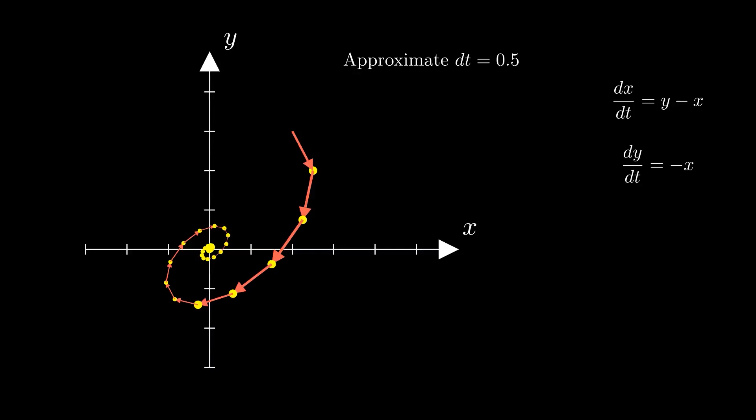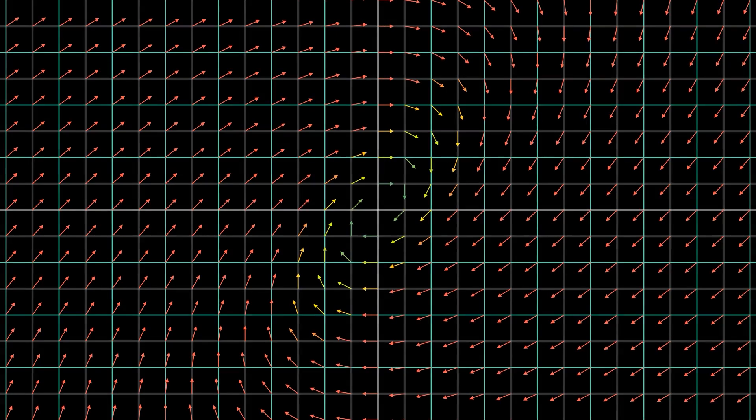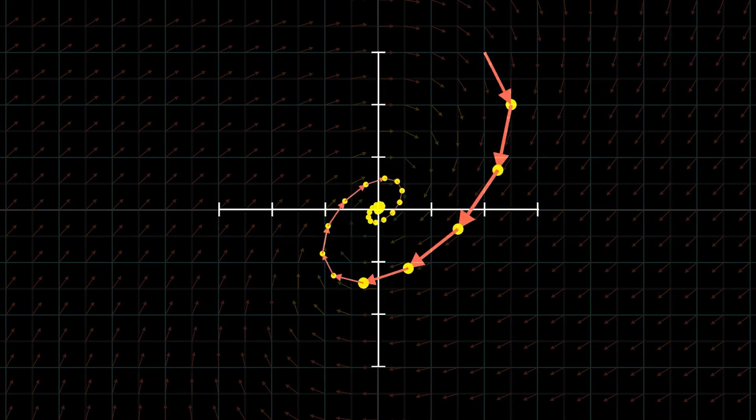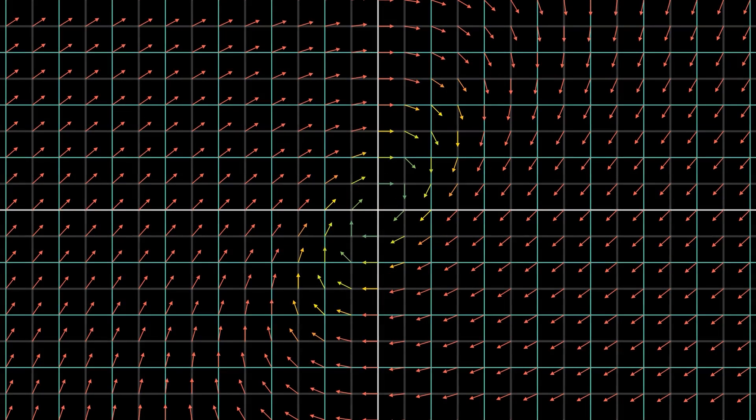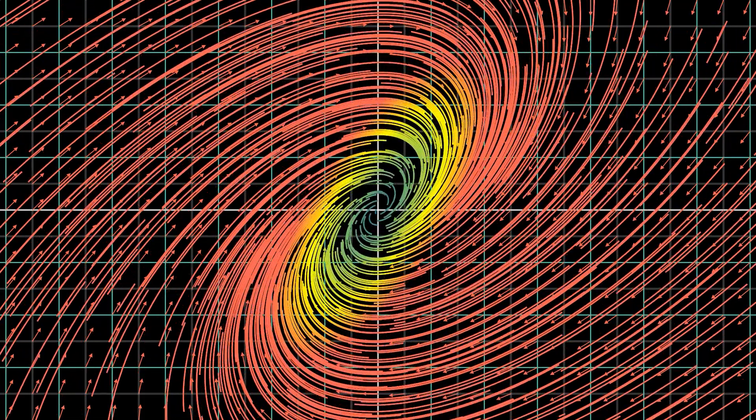If we wanted to visualise how all possible points will change over time, we can create a vector field, which assigns each point in space a velocity vector, indicating the instantaneous rate of change at that location. This is typically represented by placing arrows at regularly spaced positions on a plane. As we can see, this aligns very well with our approximation. It is important to note that a vector field like this could represent any number of systems which change through time, like wind or water flow. It might be helpful to visualise the paths of many individual starting points, giving a more tangible representation of what our differential equations are describing.